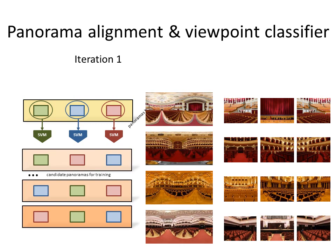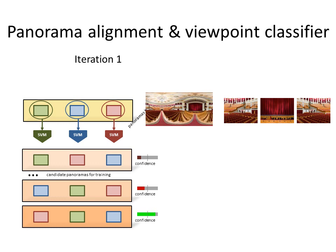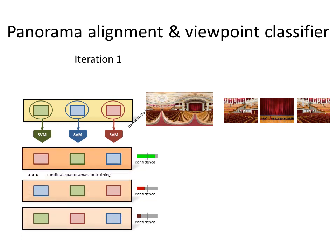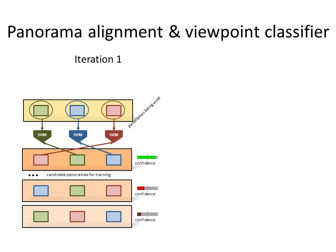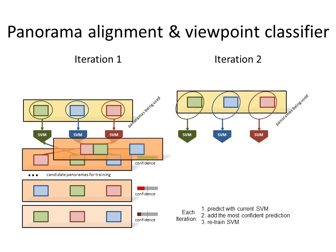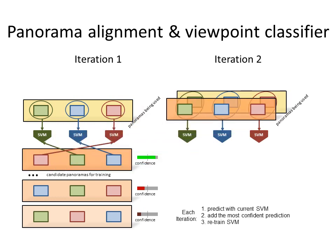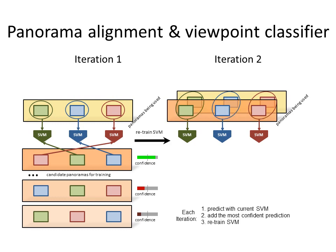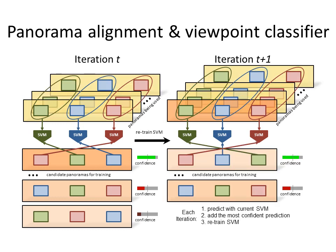We use this viewpoint classifier to predict the viewpoint for the other training panoramas. In addition, we can calculate an overall confidence score for each panorama, based on how well it aligns with a training panorama. We rank the panoramas according to their overall confidence scores, pick the panorama with the highest confidence score, and add it into the training set for the second iteration. We retrain the SVM for viewpoint classification using the learned alignment and two training examples for each viewpoint. The process continues until all panoramas have been added to the set, and the final SVM is trained on the complete training set.